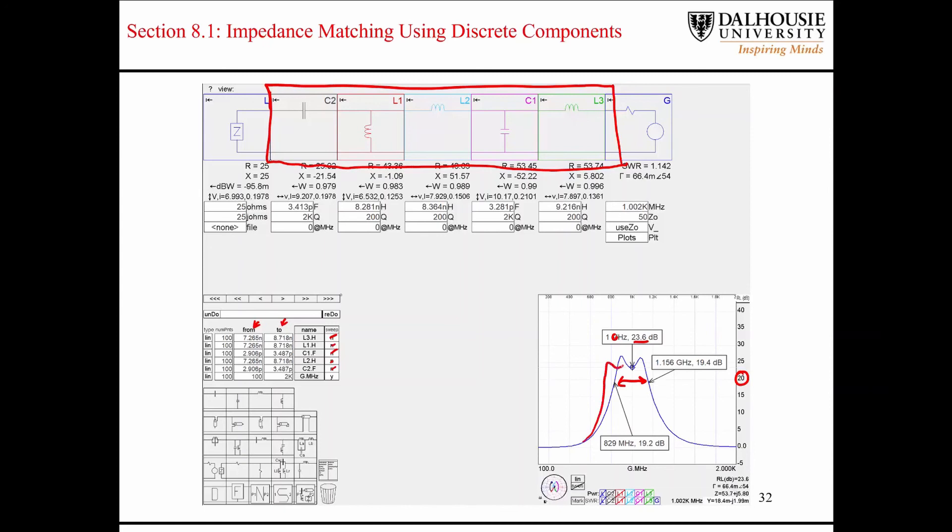You can see that even if this curve kind of shifts around a little bit, it's so wide that the kind of the best and worst case return loss values is going to be a lot less. That's just something to keep in mind when designing broadband matching networks.